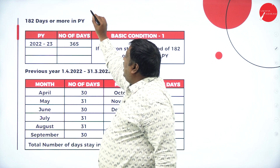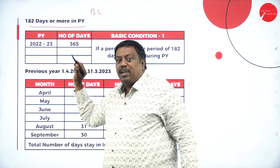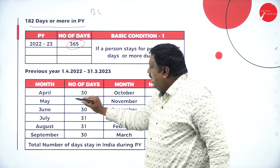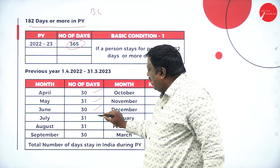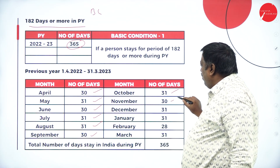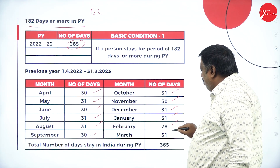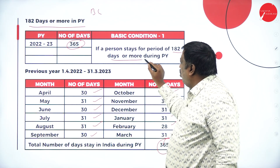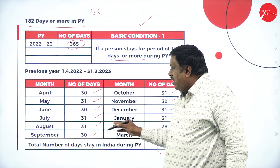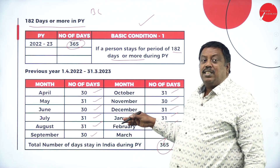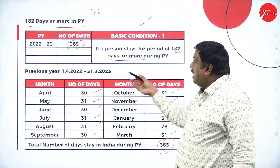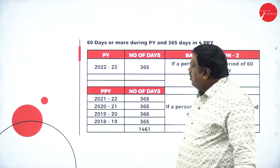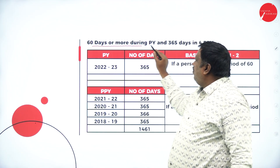In the tabular format: for basic condition one, my stay in India should be 182 days or more during the previous year. For previous year 2022-23 there are 365 days total — April 30, May 31, June 30, July 31, August 31, September 30, October 31, November 30, December 31, January 31, February 28, March 31. If I stayed 182 days or more in this period, I satisfy the first basic condition. We calculate the number of days stayed in India month by month.